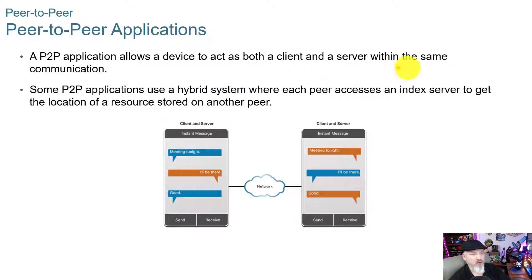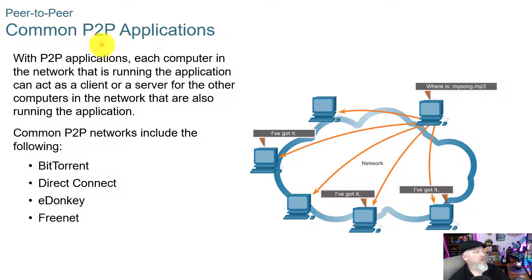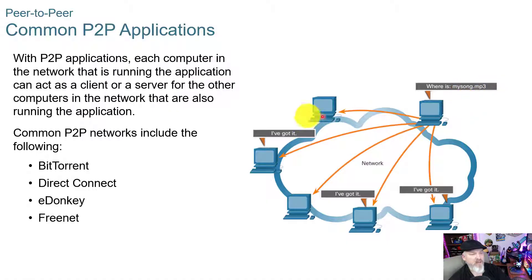A peer-to-peer application allows a device to act as both a client and a server within the same communication. Some P2P applications use a hybrid system where each peer accesses an index server to get the location of a resource stored on another peer. Common P2P applications include BitTorrent, Direct Connect, eDonkey, and Freenet. With file sharing networks, a computer can ask 'where is my song MP3?' and get pieces of it from multiple peers across the network and then reconstruct it from those different pieces.